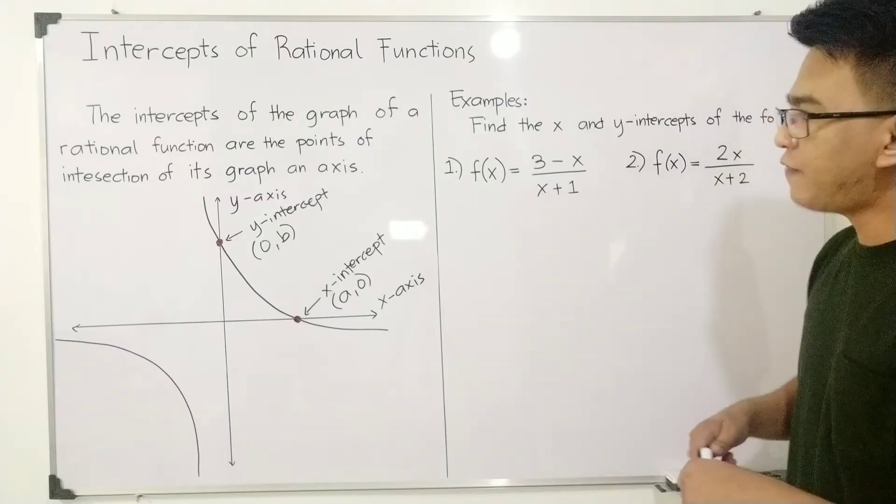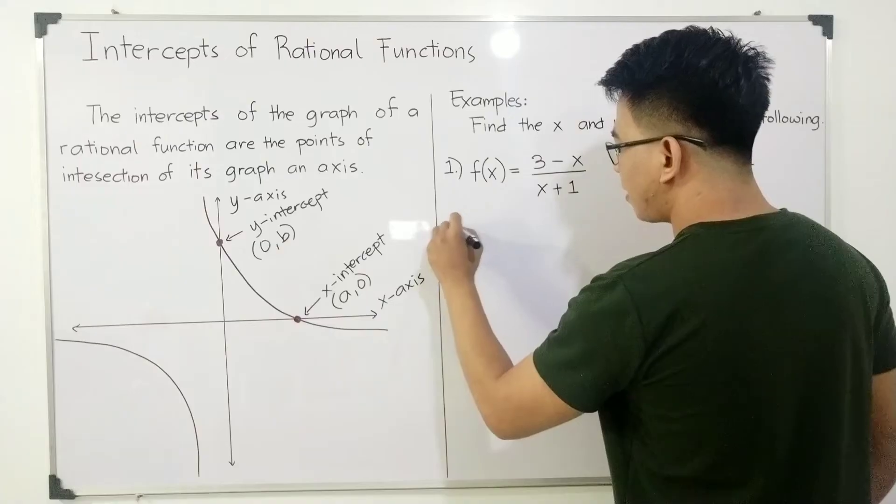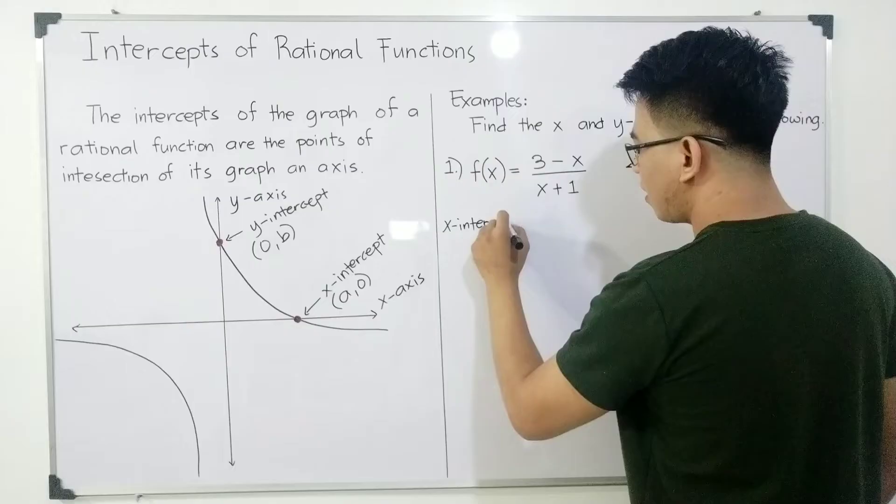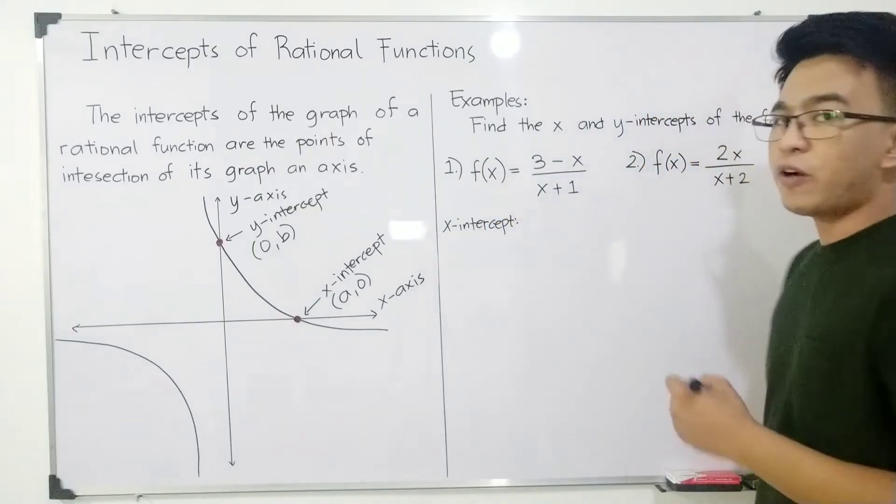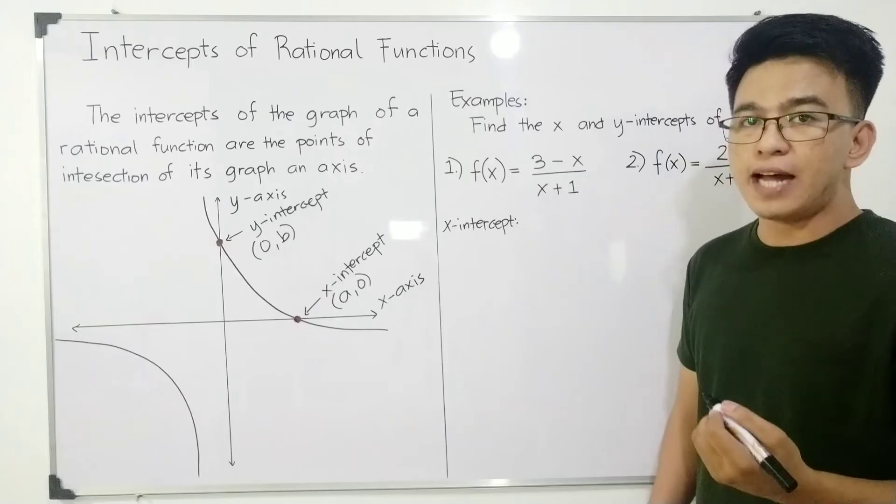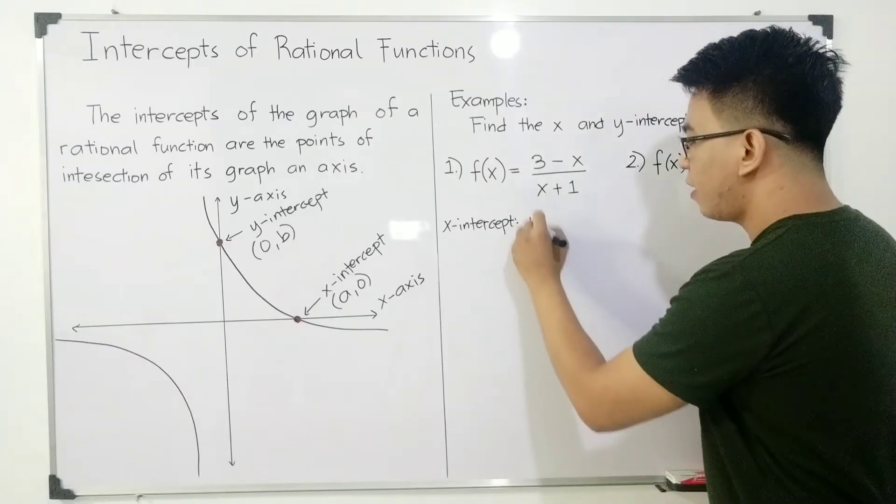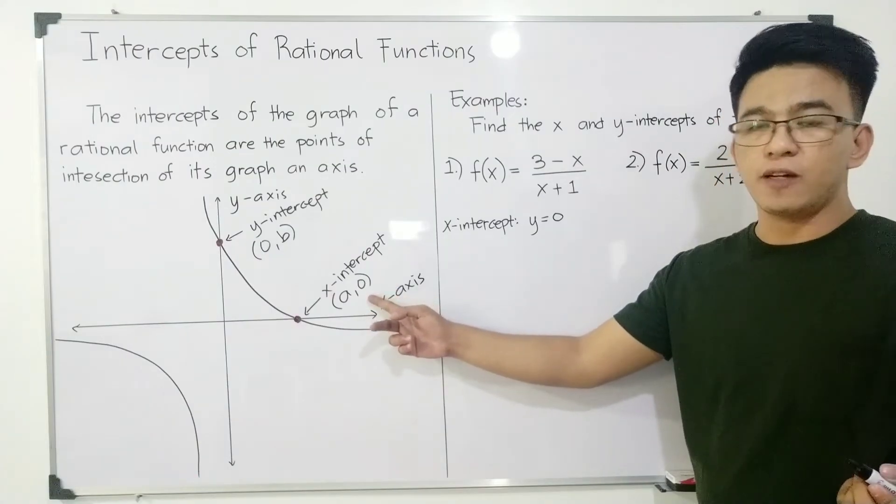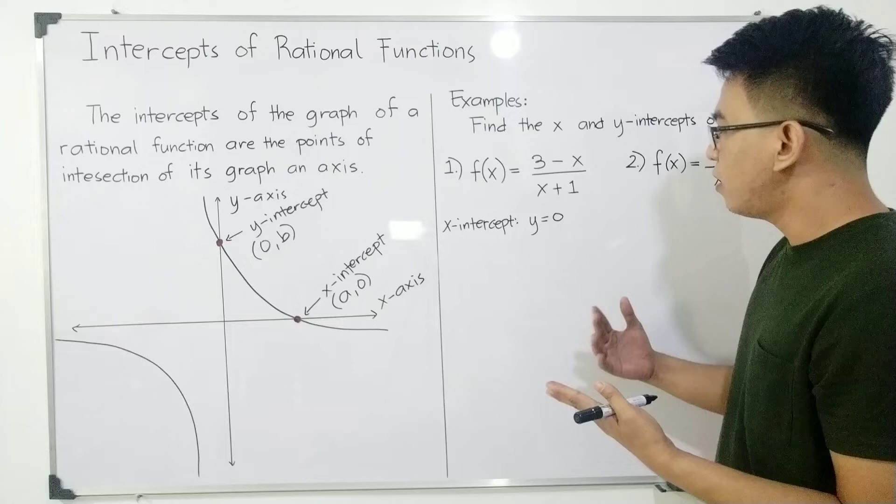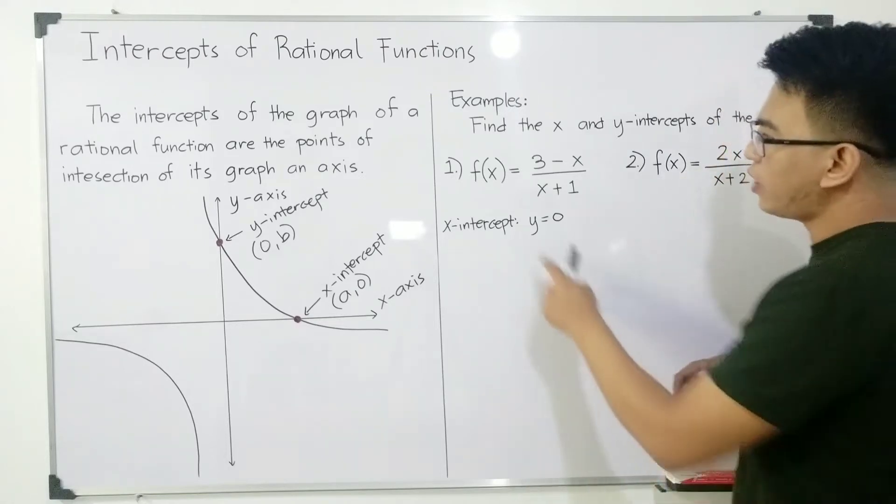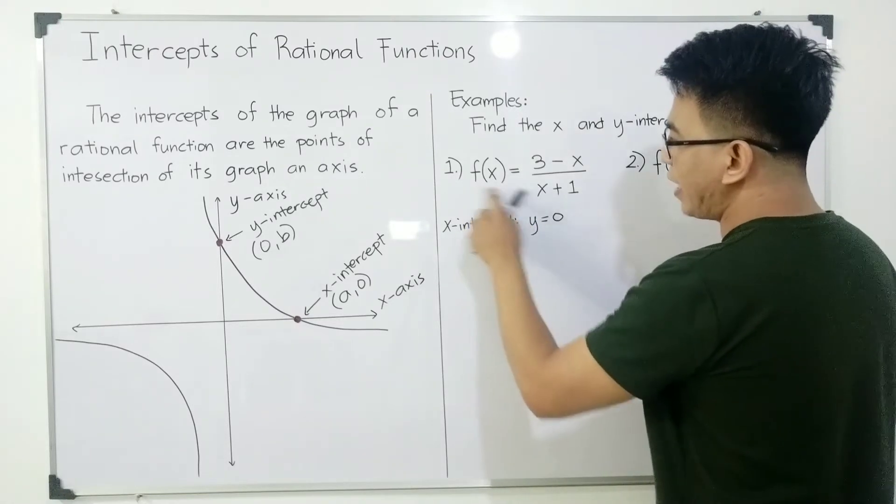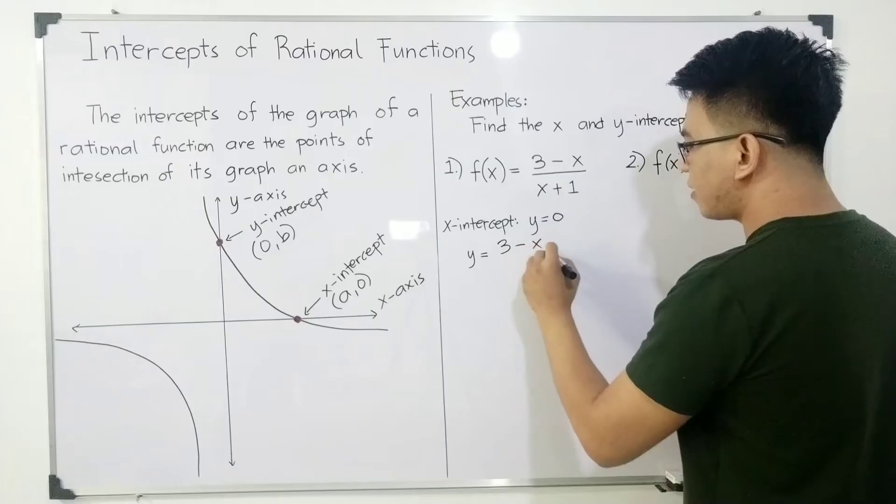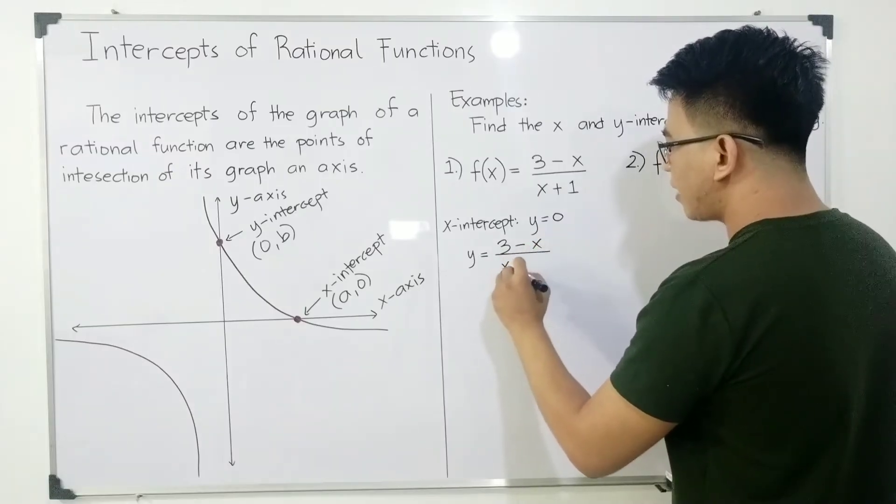Now, let us find first the x-intercept. Now remember guys, when you're solving for the x-intercept, remember that your y is equal to 0. Because these are your coordinates, your y here is equal to 0. And to solve for the x-intercept, we need to replace this by y. Let's make this y our f(x). So y = (3-x)/(x+1).